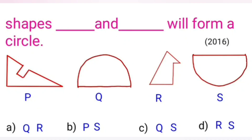Shape dash and dash will form a circle. Q and S will form a circle, so let's take option C.